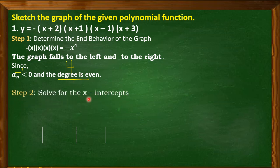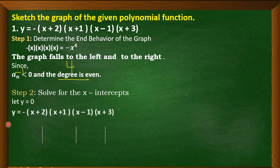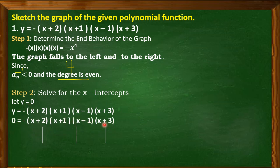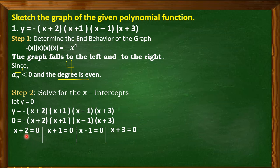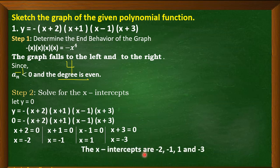Next, solve for the x-intercepts by letting y = 0. We equate each factor to 0: x + 2 = 0, x + 1 = 0, x − 1 = 0, x + 3 = 0. Solving by transposing, we get x = −2, x = −1, x = 1, and x = −3. So our x-intercepts are −2, −1, 1, and −3.